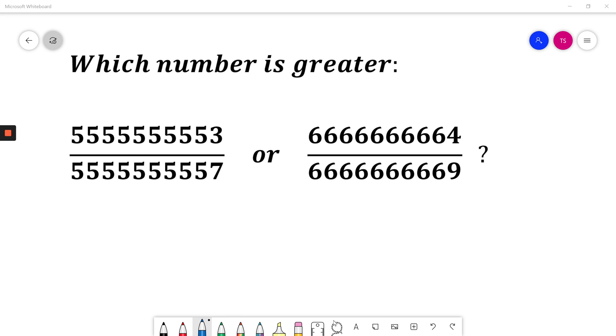Ok, I'll solve it now. So we have two fractions and 10-digit numbers in numerators and denominators. So let A be 1,111,111,111.